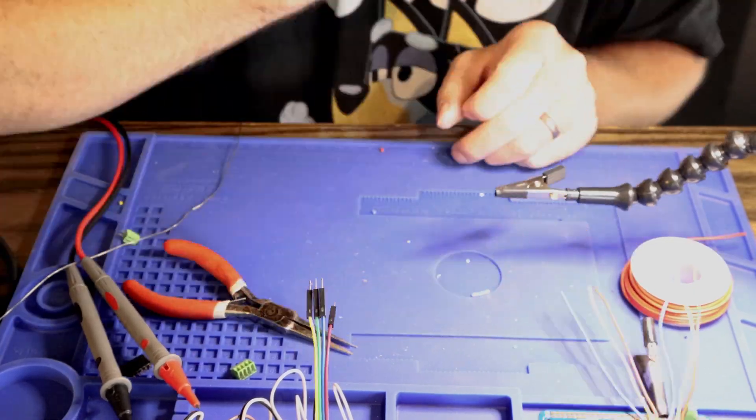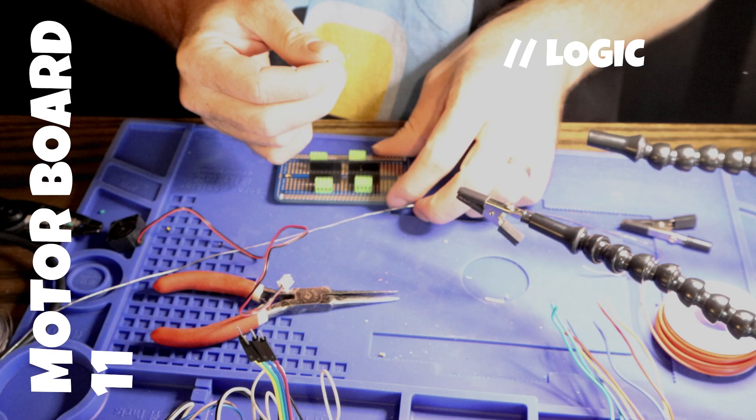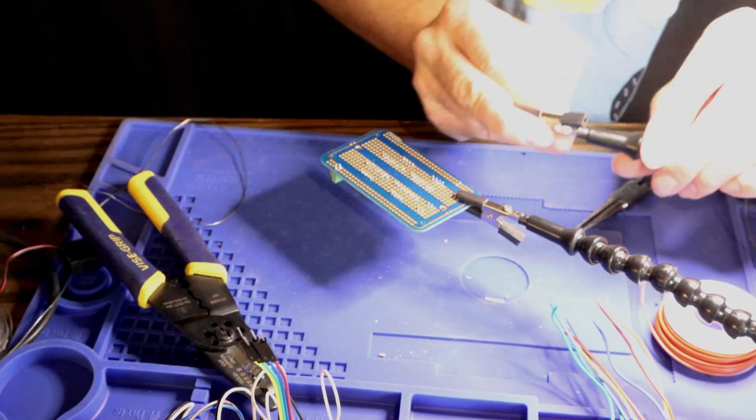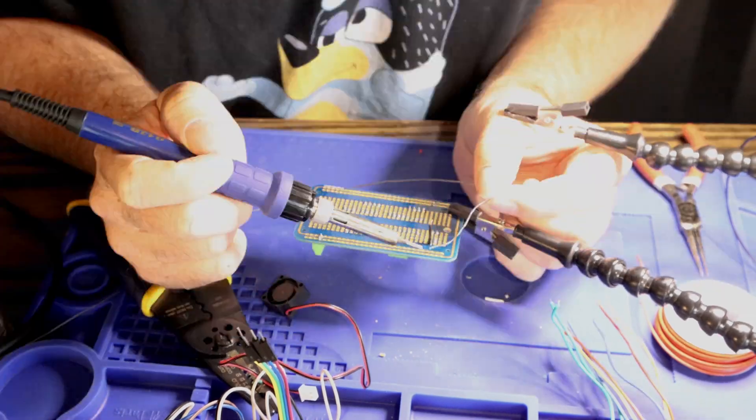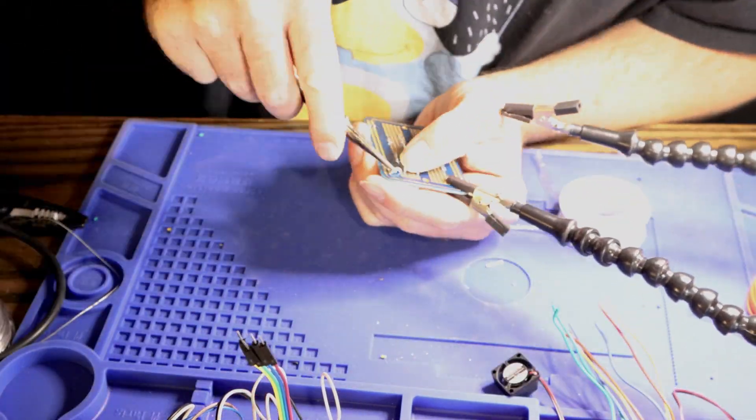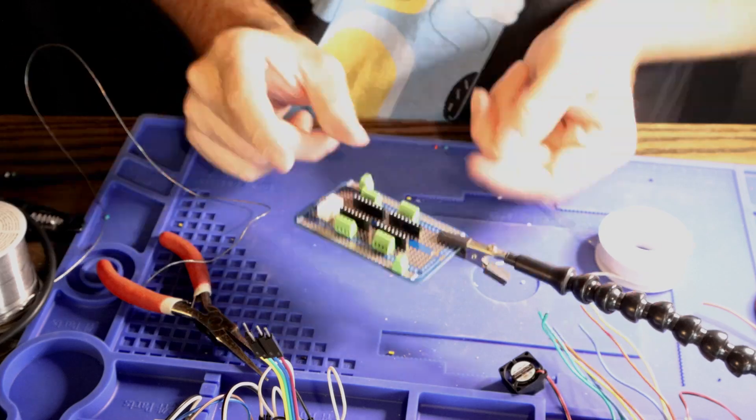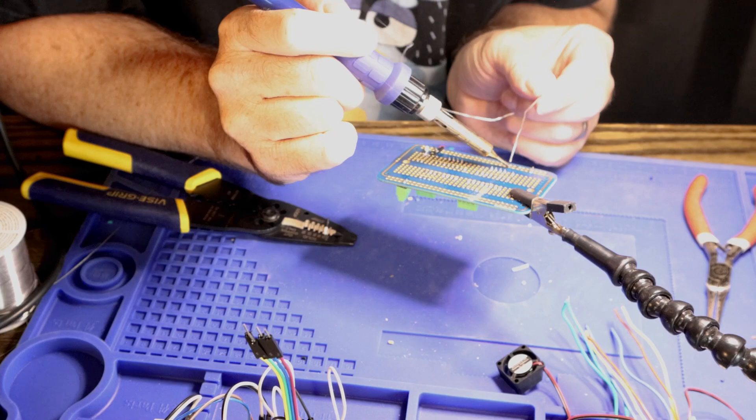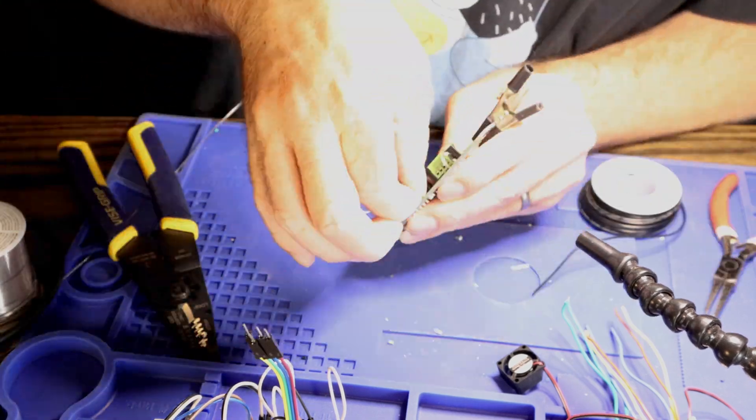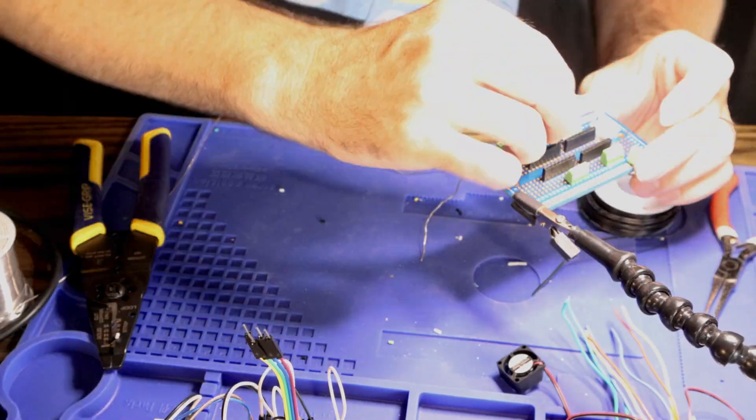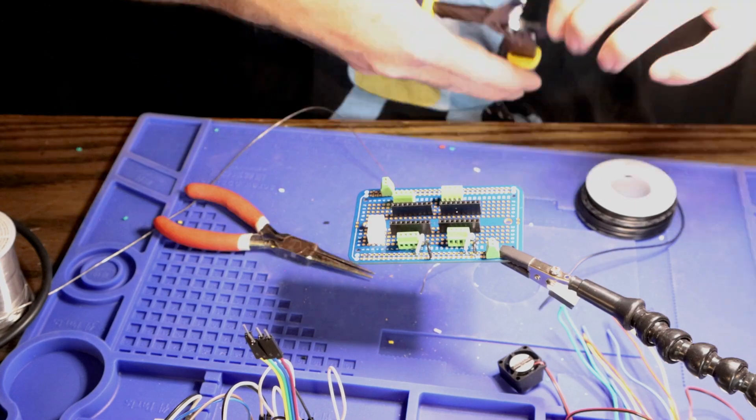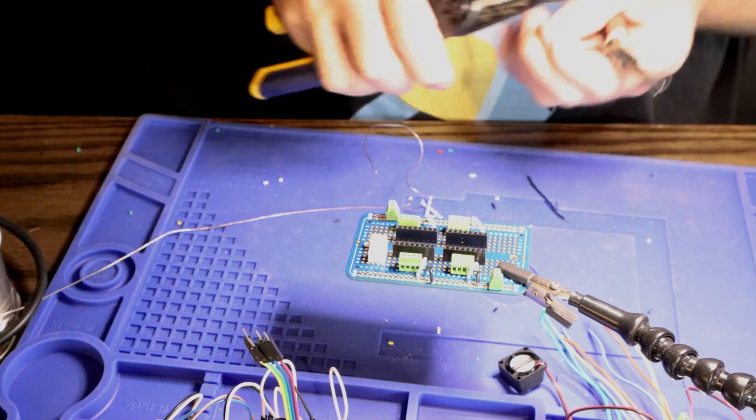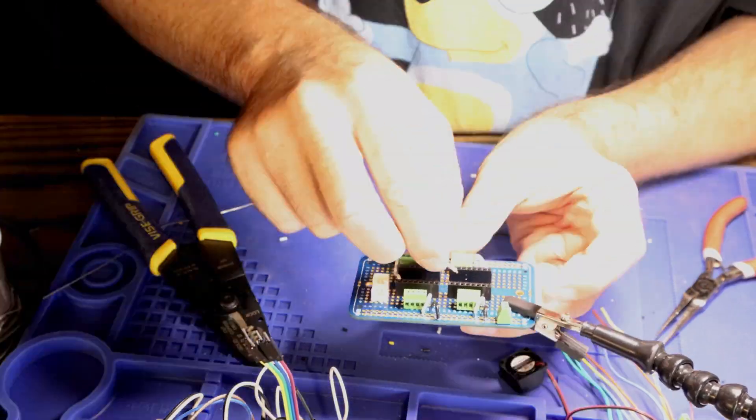One thing I'd like to figure out going forward is the lighting right now is particularly overexposed. It's kind of necessary for seeing the actual soldering, but it would be nice if this wasn't so blown out. I might have to experiment more with lighting conditions.